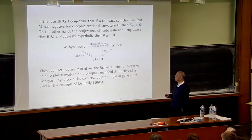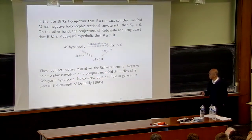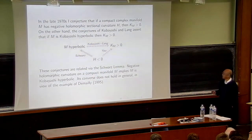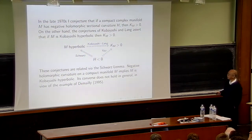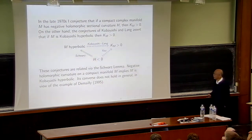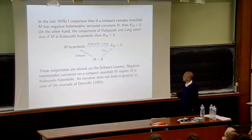I was more interested in the more specific case where holomorphic sectional curvature is negative, because that was the major reason why Kobayashi hyperbolicity was originally studied via the Schwarz Lemma — negative holomorphic sectional curvature implies the manifold is Kobayashi hyperbolic. There is a converse question; there is an example due to the Schwarz Lemma showing it is not true in general, but we still want to understand this.